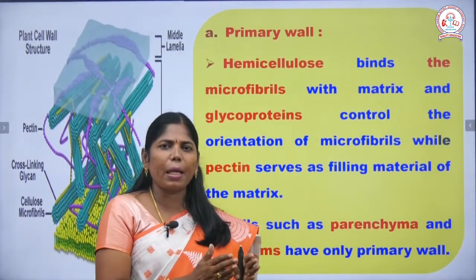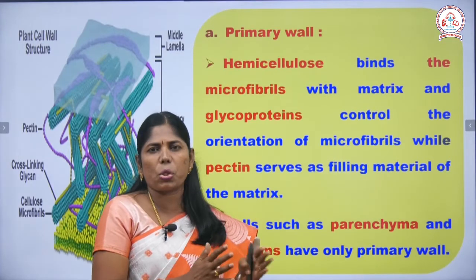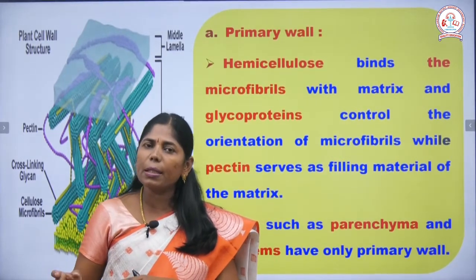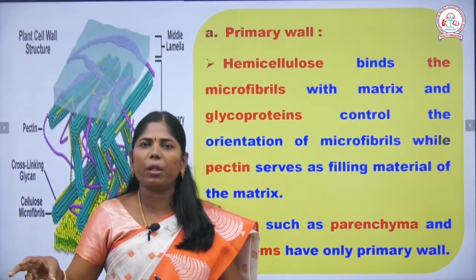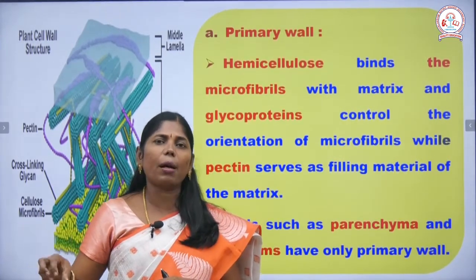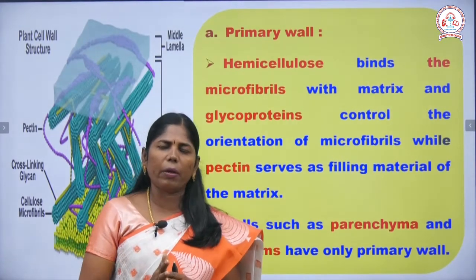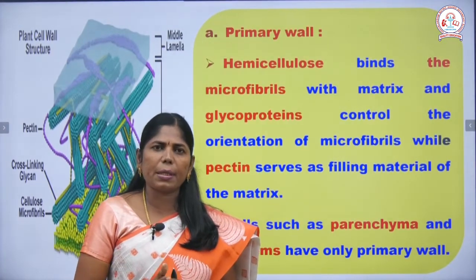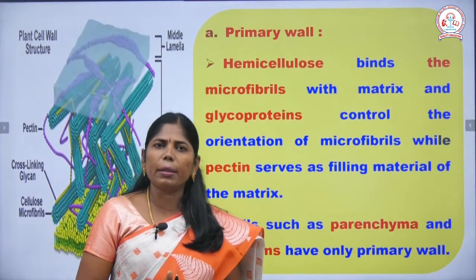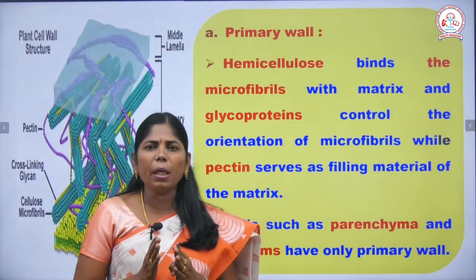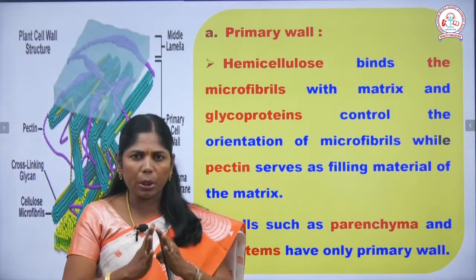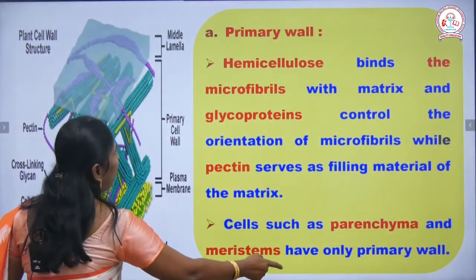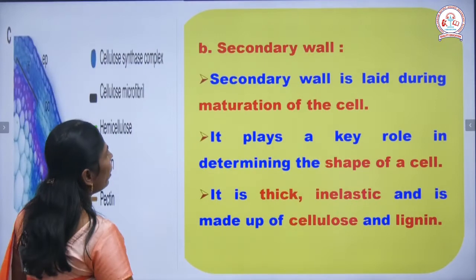In meristematic tissues, cell division continuously takes place — they are young and perpetual tissues. Parenchyma cells are permanent tissues where division has already stopped. Parenchyma and meristems have only the primary wall.